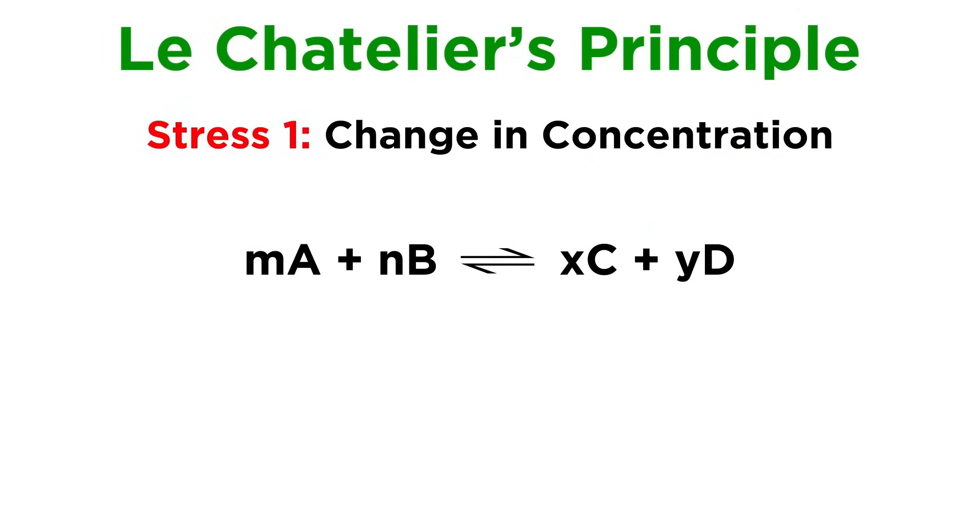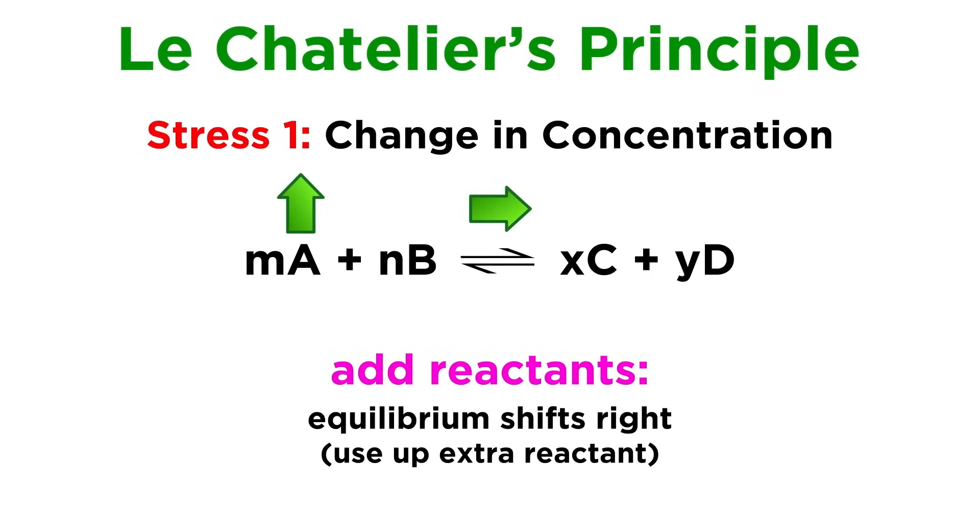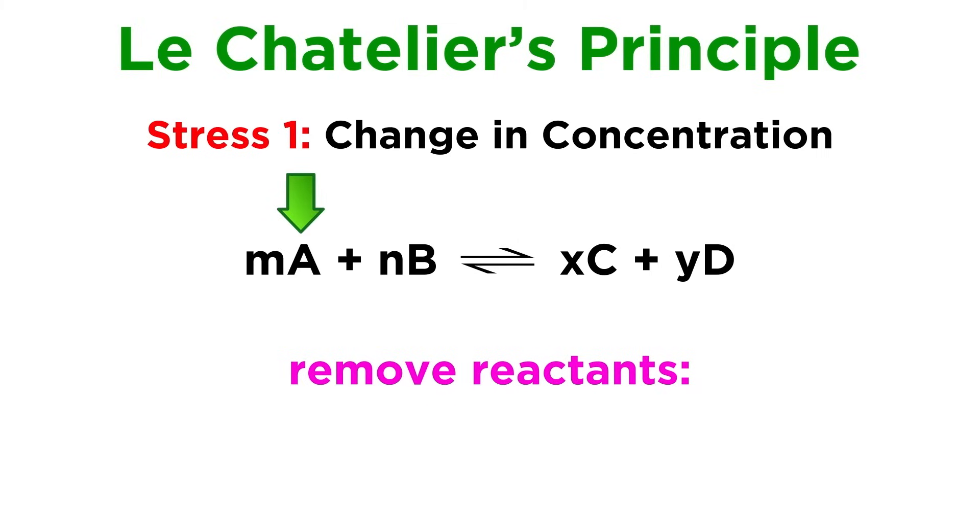The first would be a change in concentration of one of the reactants or products. If there is balance, that balance will be thrown off if we add or remove some amount of one of the substances involved. Let's say we add more reactant. The way that the system can restore balance is by shifting right to use up some of the extra reactant. If we remove reactant, the system will shift left to make more of it.